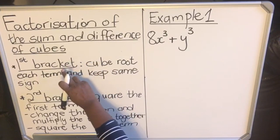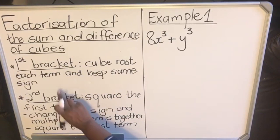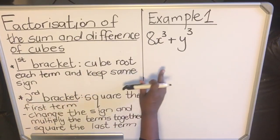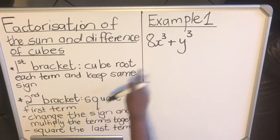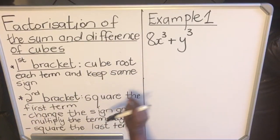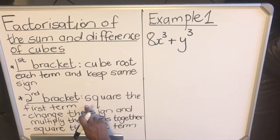So with this factorization of cubes, we have two brackets. In the first bracket... and we're going to look at the example and read the notes as we are going through the example. But you're going to have two brackets - the first bracket will be a binomial and the second bracket will be a trinomial.